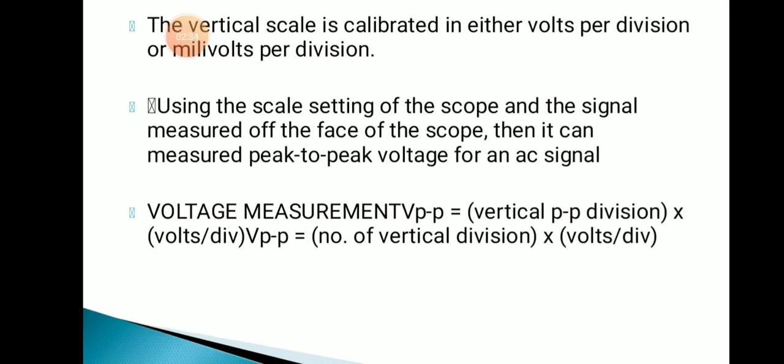Consider one sine wave. In that sine wave, you have a positive half cycle and a negative half cycle. On the x-axis you can measure the time period; on the y-axis you can measure the amplitude or voltage. The voltage measurement peak-to-peak equals the vertical peak-to-peak divisions multiplied by volts per division. That is: voltage peak-to-peak equals number of vertical divisions multiplied by volts per division.